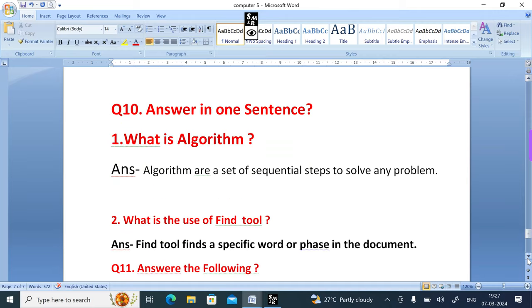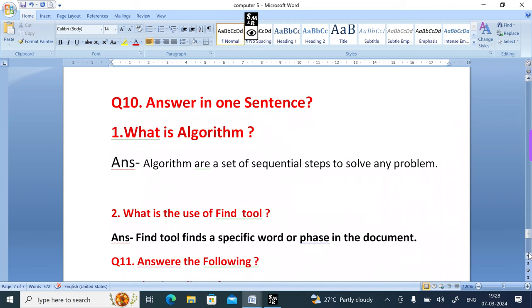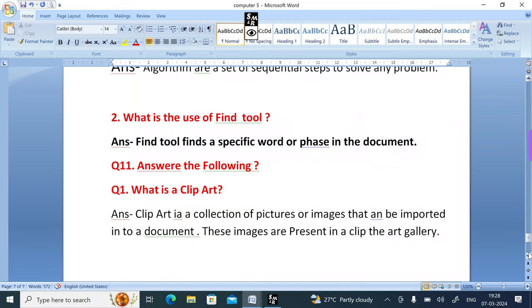Answer in one sentence. Question 1: What is the algorithm? Answer: Algorithm is a set of sequential steps to solve any problem. Question 2: What is the use of find tool? Answer: Find tool finds a specific word or phrase in the document. Question 11: What is clip art? Answer: Clip art is a collection of pictures or images that can be imported into a document. These images are present in a clip art gallery.